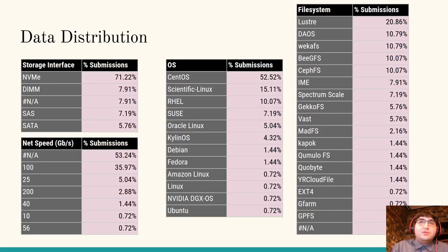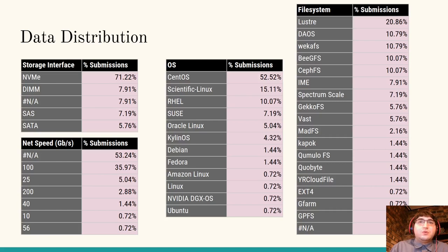Now we'll talk about the distribution of the dataset. The vast majority of submissions, about 80%, used either NVMe or DIMM for storage. Most submissions do not report the network interconnect speed, so this field will probably not be useful. There were 12 unique operating systems, but the major ones used were CentOS, Scientific Linux, Red Hat Enterprise, and SUSE. There are 17 unique file systems and one that was not disclosed. This field had a lot of variability.